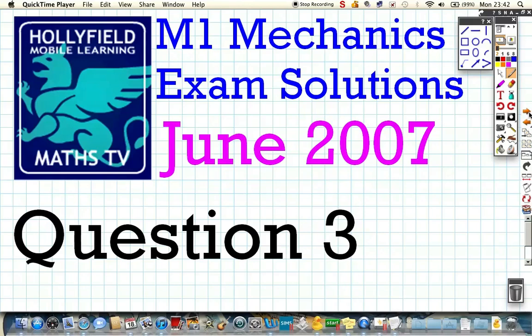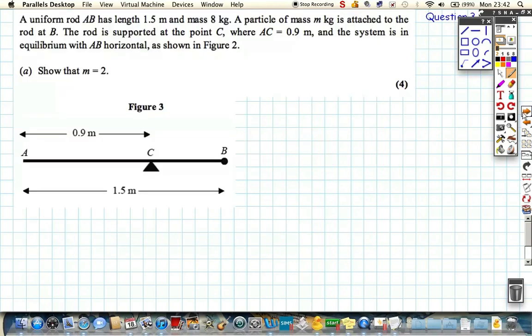Question 3 from the 2007 Mechanics M1 paper. So we've got a moments question here, we've got uniform rod as pictured, length 1.5.